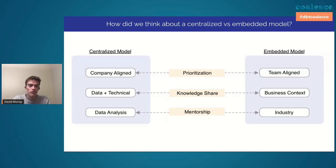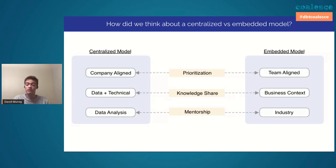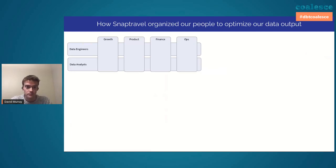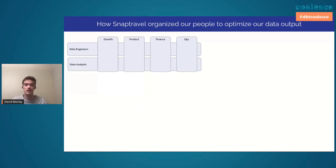So these were the trade-offs we considered, but this wasn't the only change we made. To solve that people issue, we went through a ton of different iterations. The first was a framework where we took all of our data resources and asked what are all the teams that need data help. In actuality, there were about seven or eight of those teams.